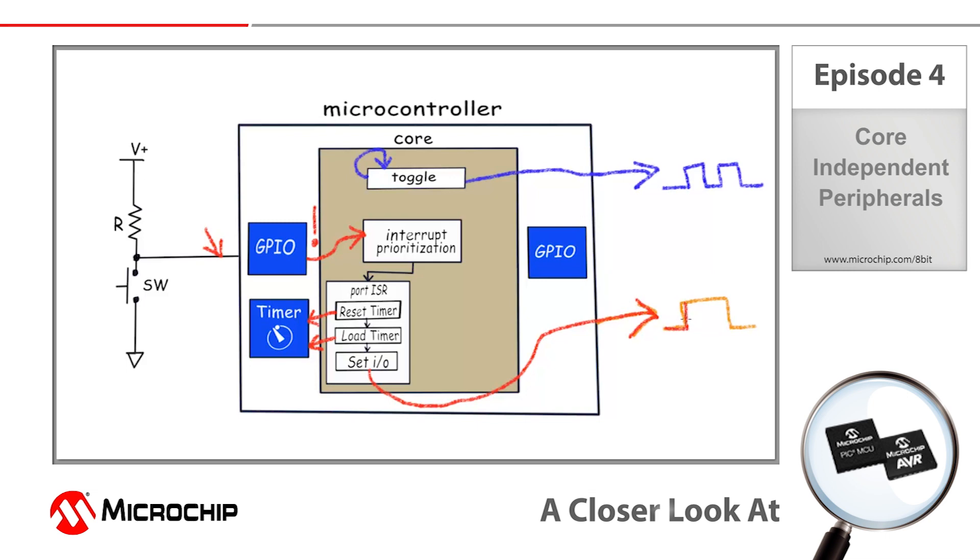When the port interrupt service routine is finished, the core can then go back to what it was doing before, in our case toggling our heartbeat signal. So the core continues to toggle the heartbeat signal until the timer overflows at our configured 2 milliseconds, and an interrupt is triggered. Just like with the IO port interrupt, a prioritization in hardware or software is implemented, and pending no other higher priority interrupts, the timer interrupt service routine is called.